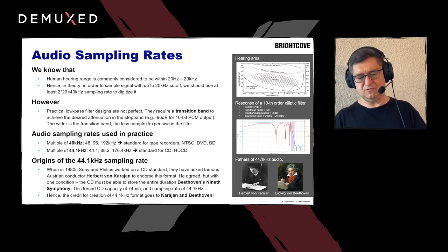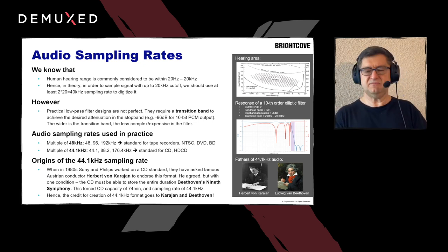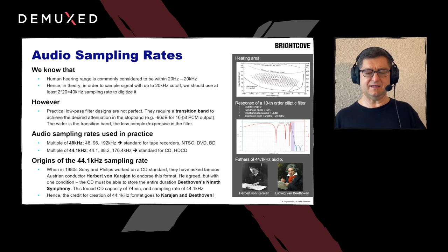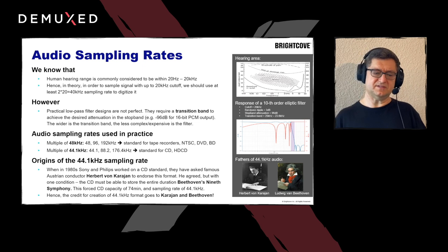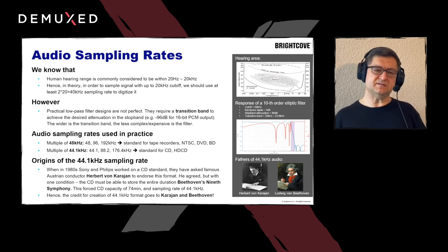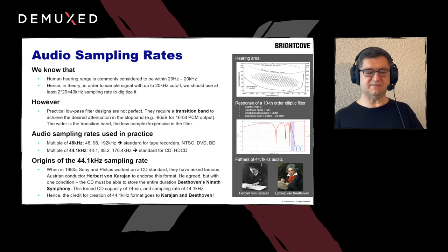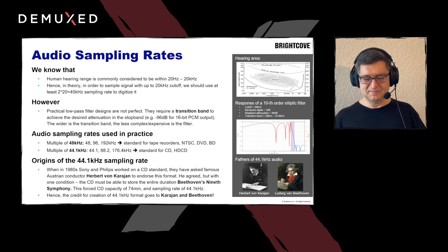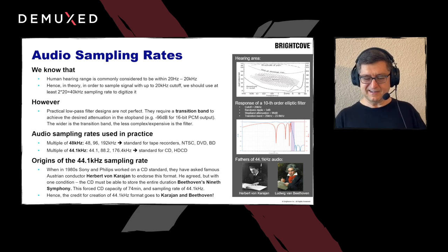For the design of CDs, a different sampling rate was adopted — also a very odd number: 44.1 kHz. How did that come about? It's actually an anecdote. Sony and Philips, when working on the standard, reached out to Herbert von Karajan, the famous Austrian conductor, and asked him to endorse the format. He said: one condition — I want the disc to hold the longest performance I could conduct. That turned out to be Beethoven's Ninth Symphony, which runs 74 minutes. The only way to fit it on a CD was to reduce the sampling rate to 44.1 kHz. Credit goes to von Karajan and Ludwig van Beethoven.